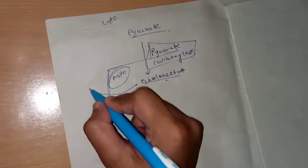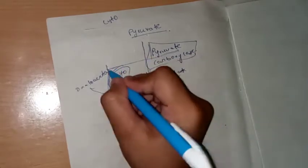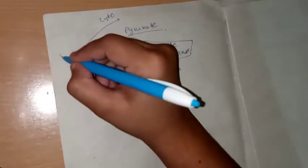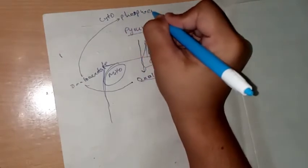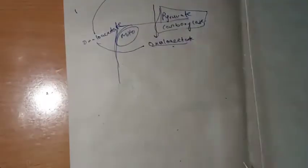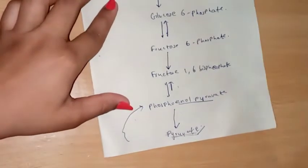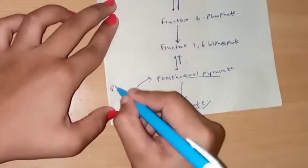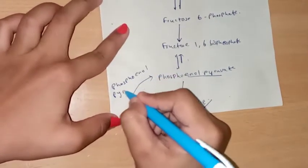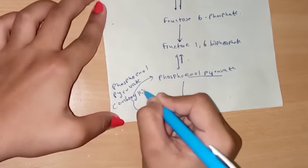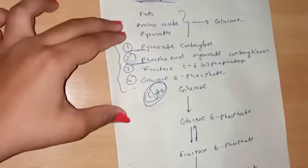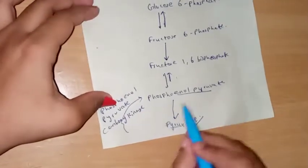This oxaloacetate is then brought back to the cytoplasm and converted to phosphoenolpyruvate — the precursor of pyruvate. The conversion of oxaloacetate to phosphoenolpyruvate is carried out by the enzyme phosphoenolpyruvate carboxykinase, which is the second key enzyme.